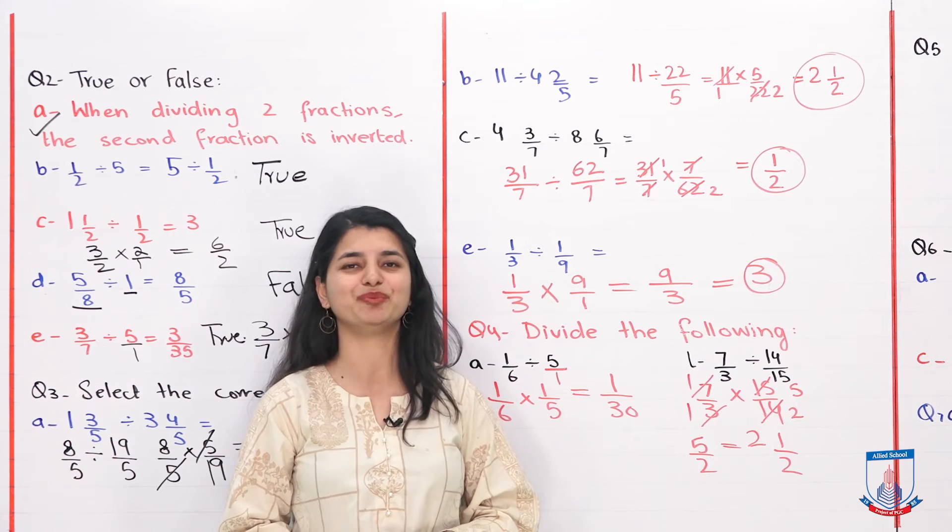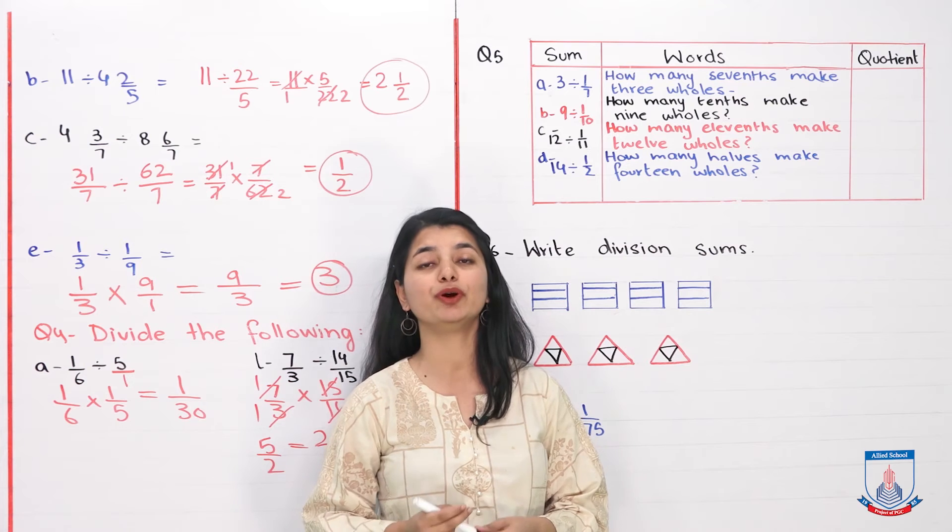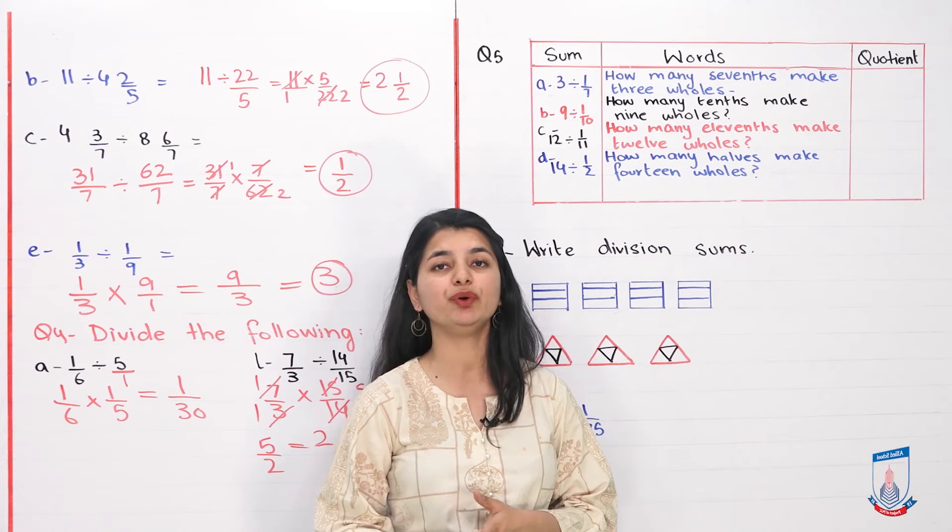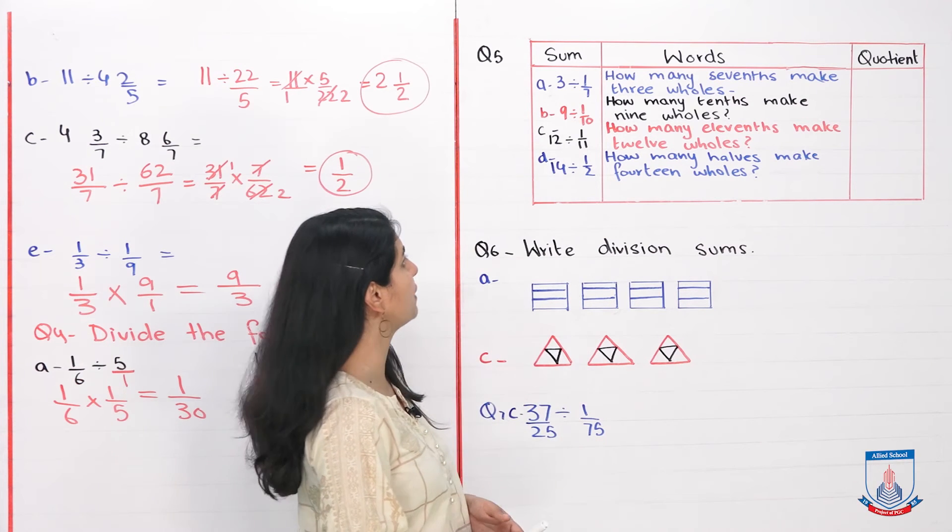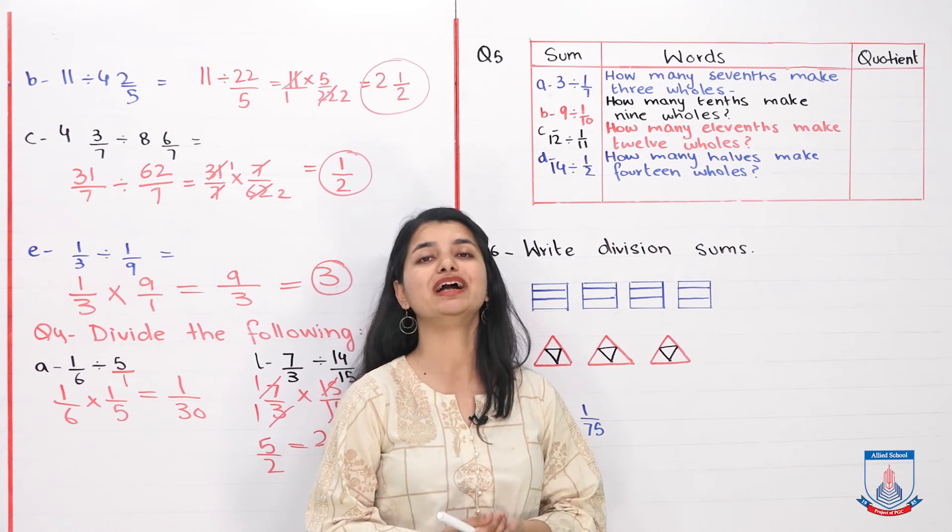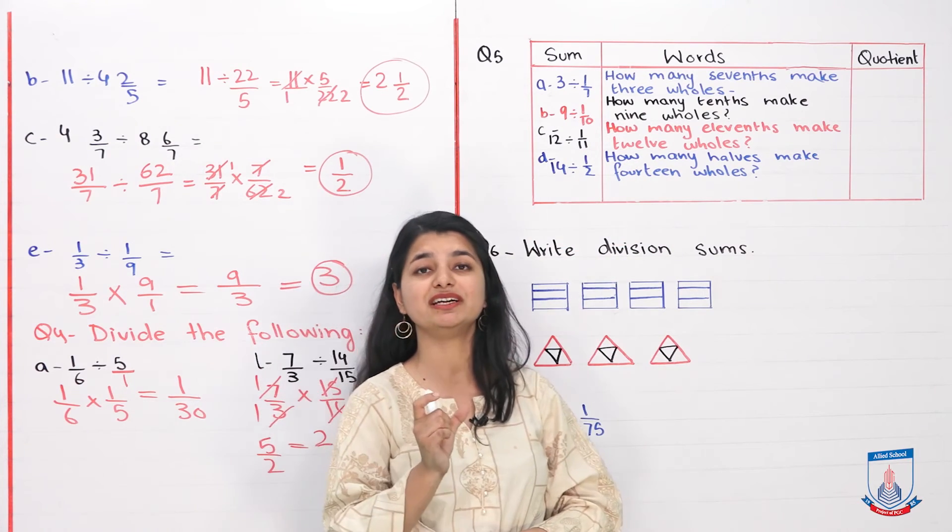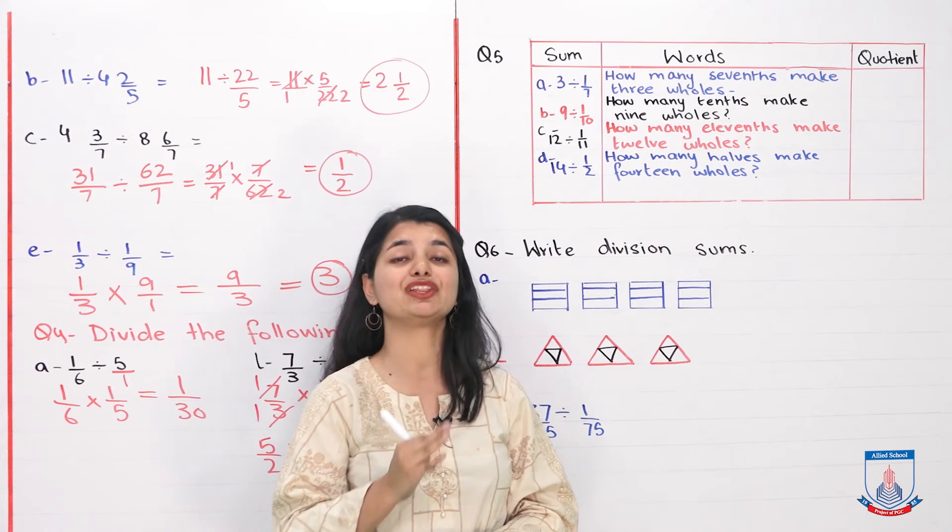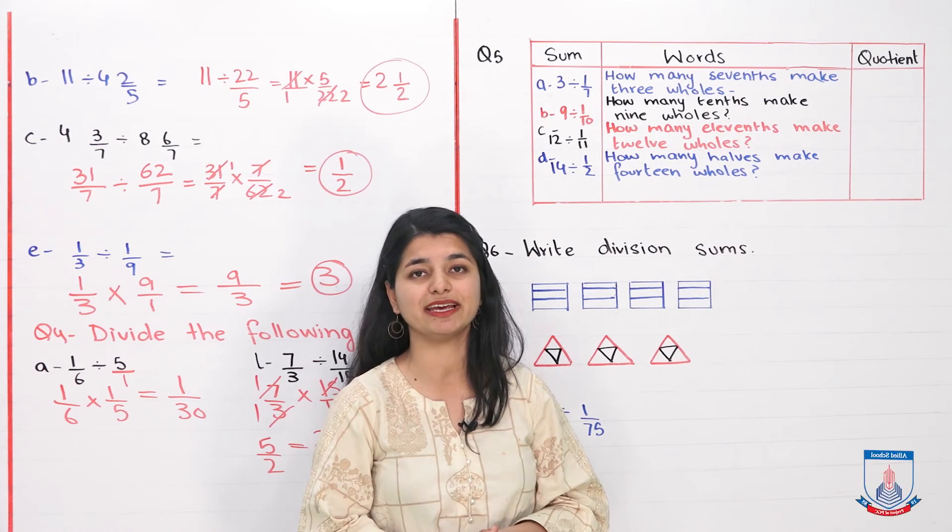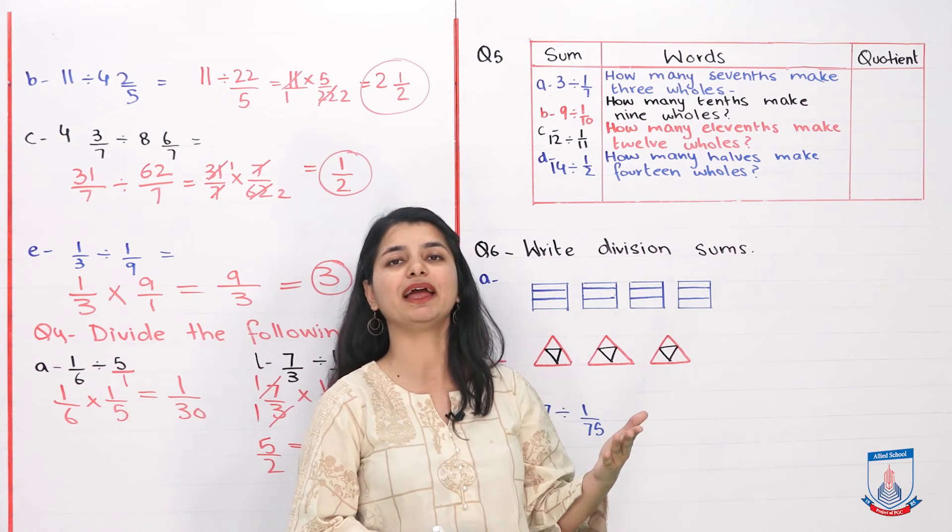Now we'll look at question number 5. In question number 5, you've been given a table, you have to fill it in. The first part, we've given you as an example. The remaining parts we'll do together. In part A, we gave you the sum 3 divided by 1 over 7. You had to write it in words. How do you write it in words? Look at what we gave you for thirds. It was 5 into 1 by 3, meaning 1 by 3 we call 1 third or thirds, because it's divided into 3 parts, and we multiply it by 5 wholes, meaning the 5 whole numbers given separately.